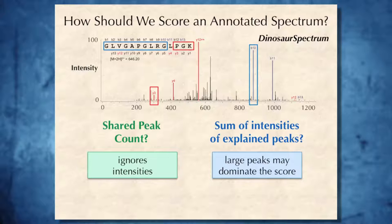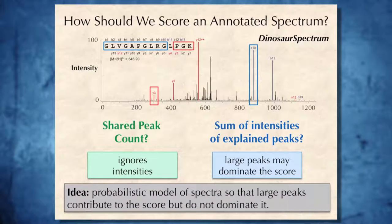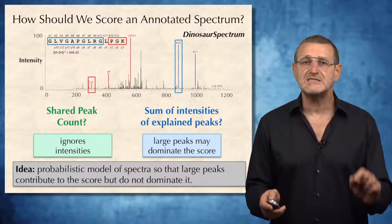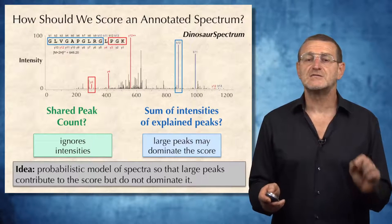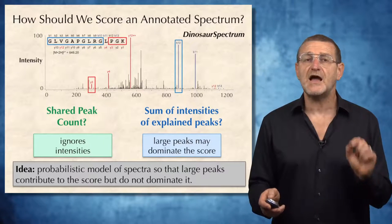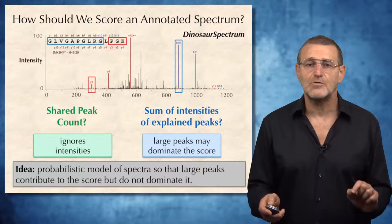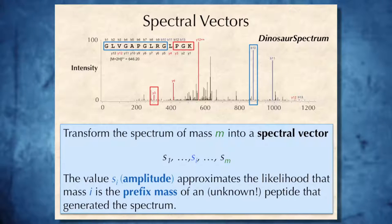Sum of intensity, on the other hand, may lead to a problem when large peaks dominate the score. Our goal is to come up with a probabilistic model of spectra, so that large peaks contribute to the score, but do not dominate the score.